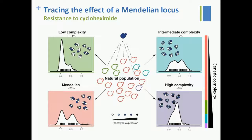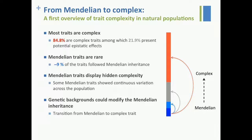There are two points here. First, prediction of phenotype based on genotype is a big issue. Second, I talk about penetrance and expressivity — most of the time these two words are misused, and in some ways their use makes no sense. To summarize: most cases are complex — 85%, among which 21% present potential epistatic effects. Mendelian cases are rare, estimated at 9%. Mendelian traits display hidden complexity, and genetic backgrounds can modify Mendelian inheritance.